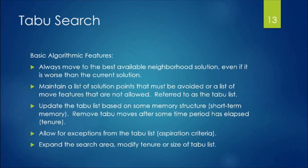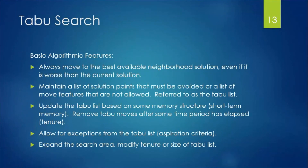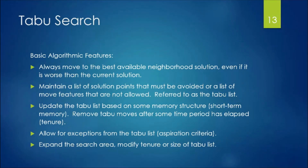The basic algorithmic feature is that it always moves to the best available neighborhood solution, even if that solution is worse than the current one. If no neighborhood solution is as good as the current solution, we still move to the best available solution in the neighborhood.